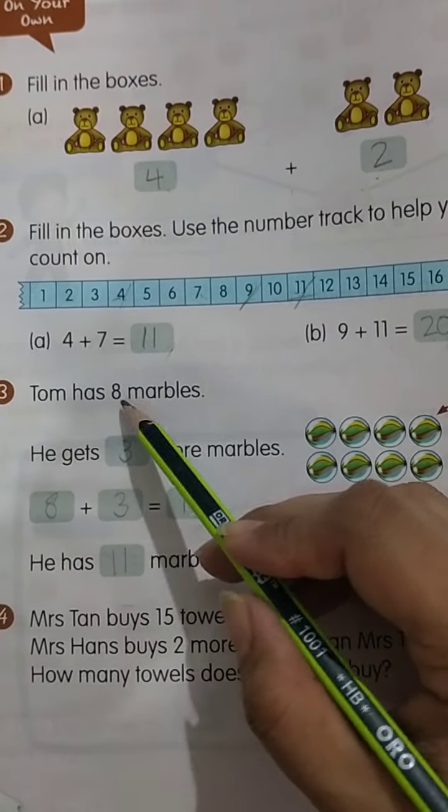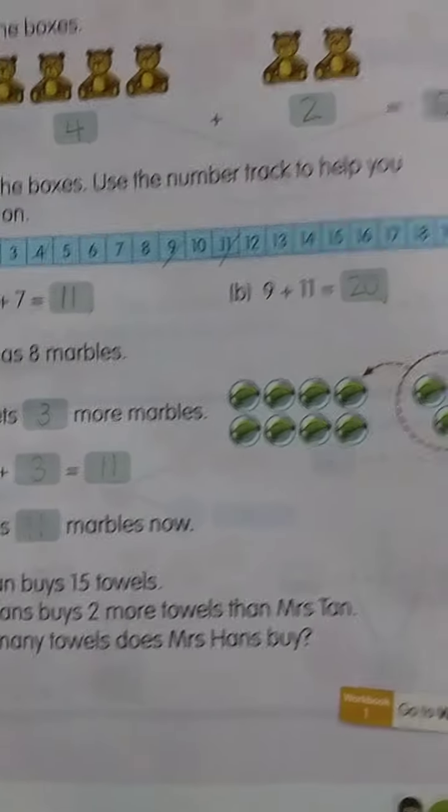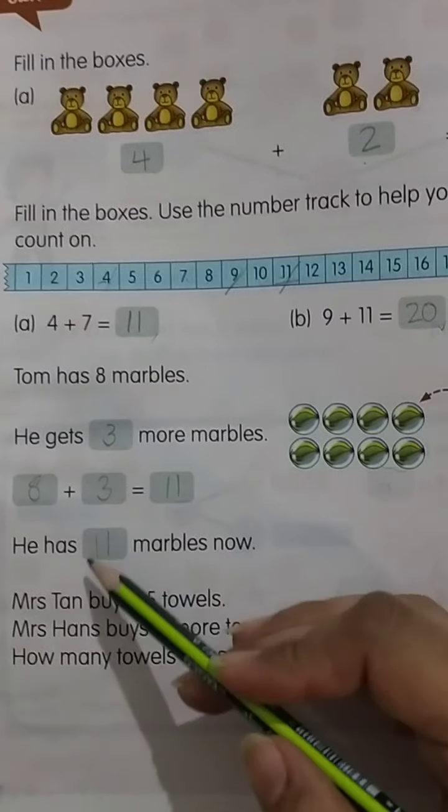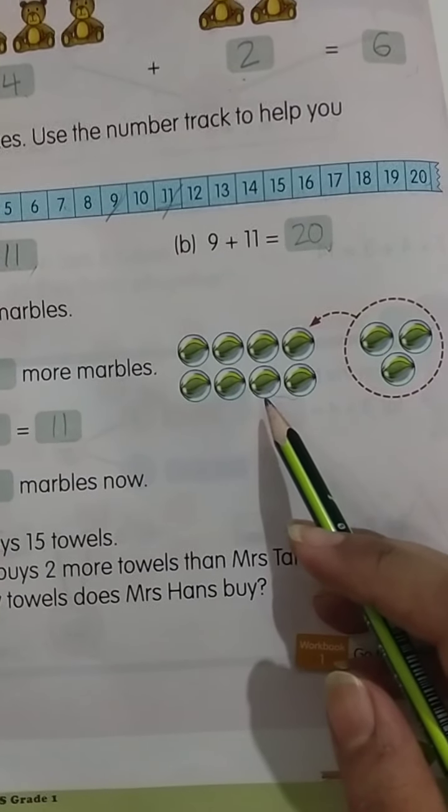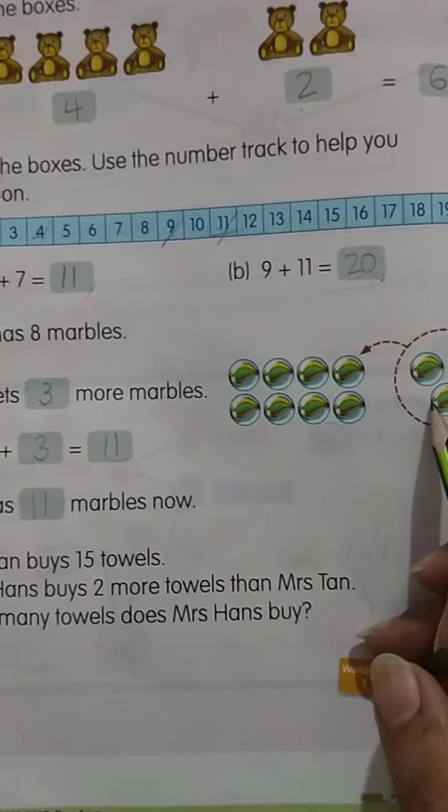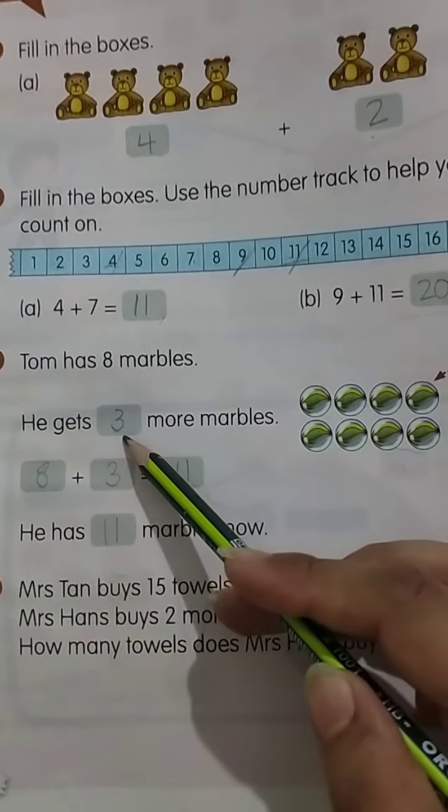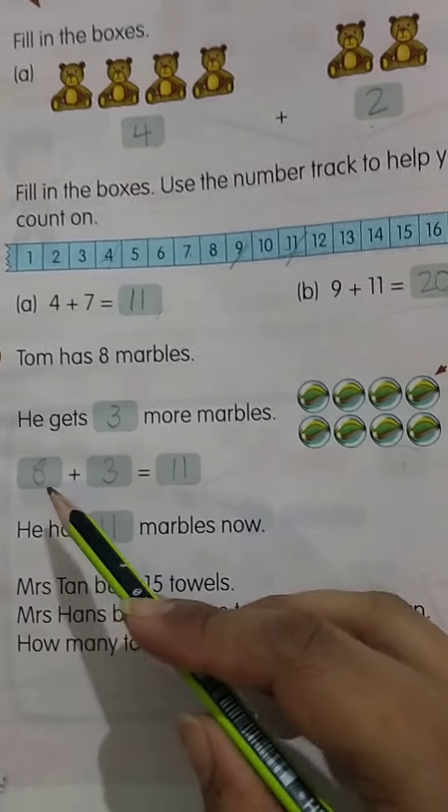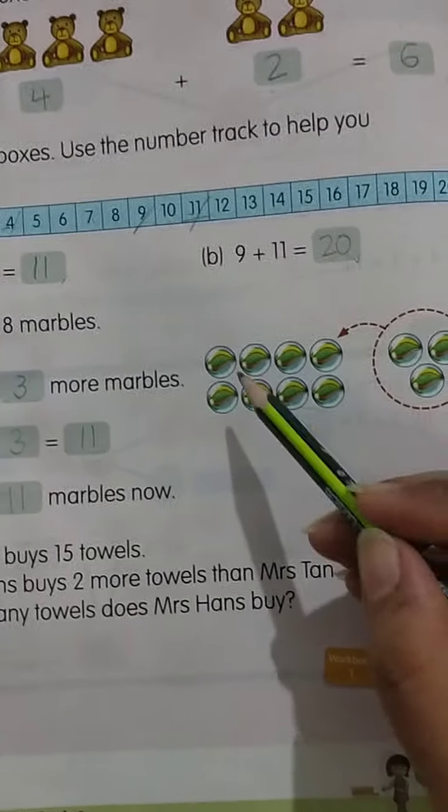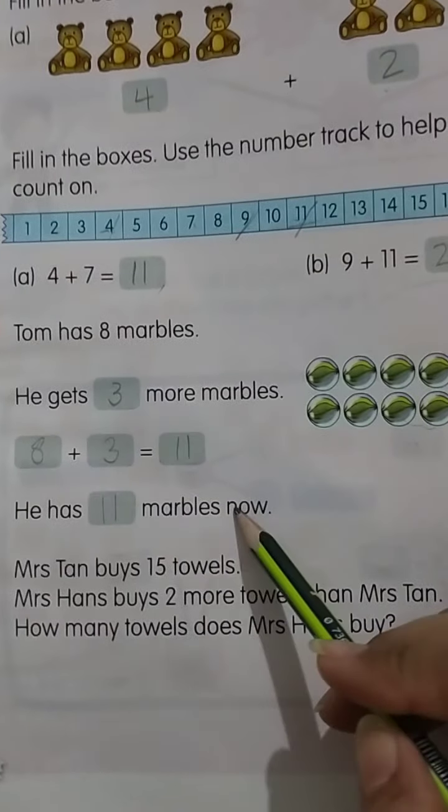Next question. Tom has 8 marbles. Tom کے پاس 8 marbles ہیں. He gets 3 more marbles. اس نے 3 اور خرید لیے. He has 11 marbles. انہوں نے بتایا ہے کہ 8 اس کے پاس پہلے تھے. اس میں اس نے 3 اور ڈال دیے. 3 اس نے add کر لیے. اب یہ total جو ہیں. اس کے پاس 11 marbles ہیں. 8 plus 3 is equal to 11. 1, 2, 3, 4, 5, 6, 7, 8, 9, 10, 11. He has 11 marbles now.